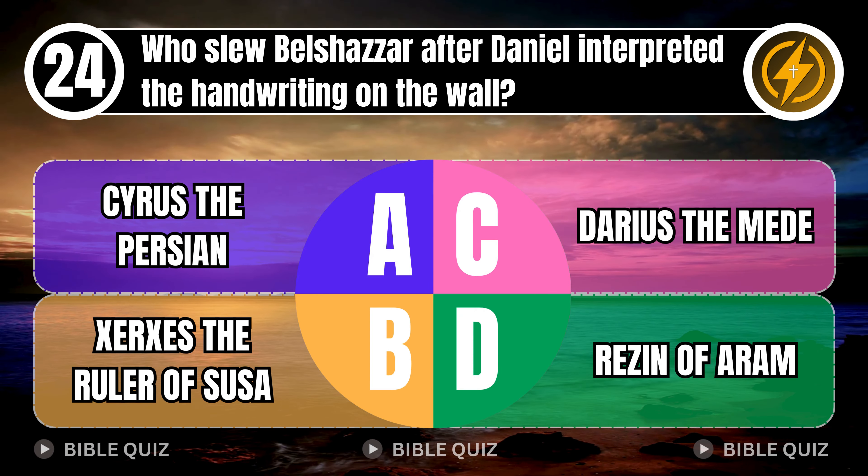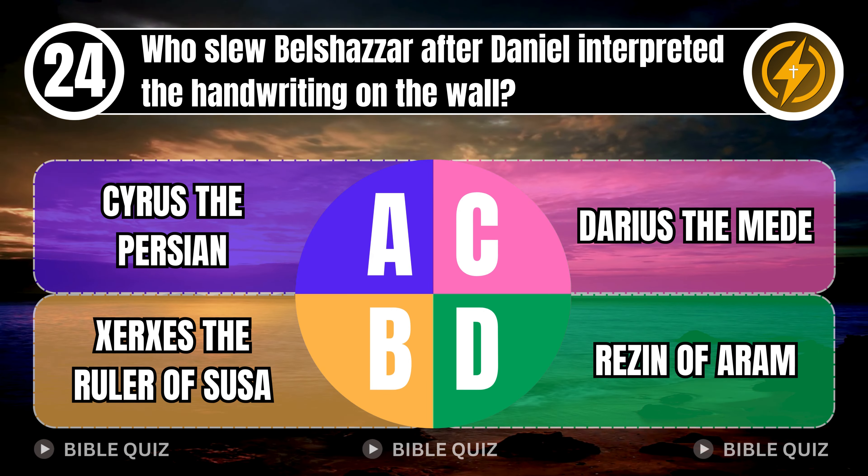Question 24: Who slew Belshazzar after Daniel interpreted the handwriting on the wall? A. Cyrus the Persian. B. Xerxes the ruler of Susa. C. Darius the Mede. D. Erezon of Aram. Correct answer: C. Darius the Mede. That very night Belshazzar, king of the Babylonians, was slain, and Darius the Mede took over the kingdom at the age of 62. Daniel 5 verses 30–31.